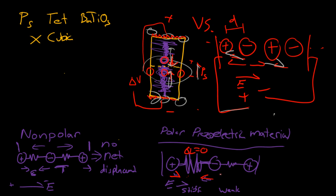But this is a really weak spring, so this atom wants to go that way and this positive one wants to go this way — so this actually moves quite a bit. It's easy. And because this cancellation doesn't occur, this material will now become smaller. We will have a net displacement.